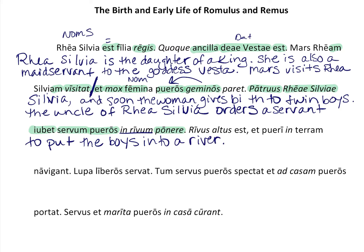You can always put things like 'into the river' as long as your translation makes sense. 'Fluvius' means river. Then we come to a verb: 'est' — the river is. The next word in your glossary means 'deep,' so the river is deep. Then 'et pueri' — 'and the boys.' 'Pueri' is the nominative form, and you should recognize it by now.